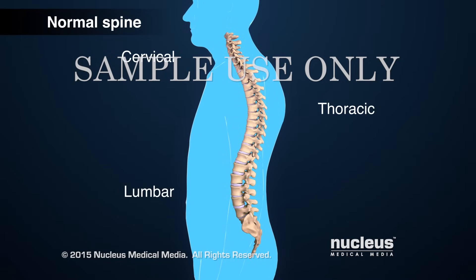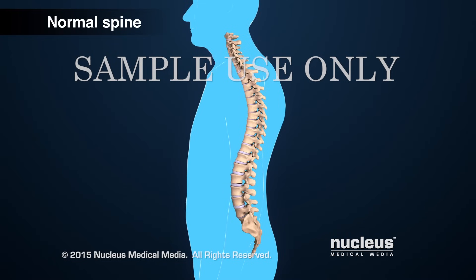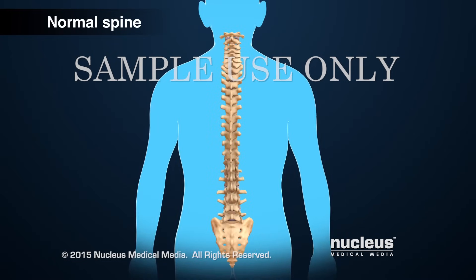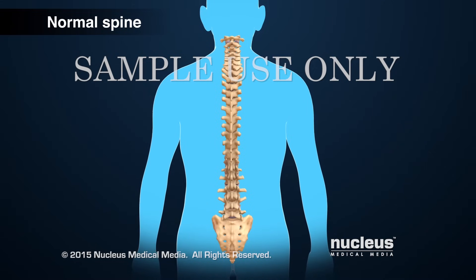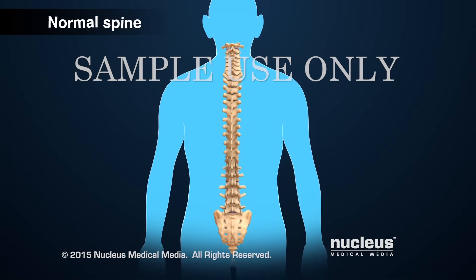Looking at it from the side, the spine normally has three curves: a C in the cervical spine, a reverse C in the thoracic spine, and another C in the lumbar spine. Viewed from behind, the spine should appear to be completely straight up and down.